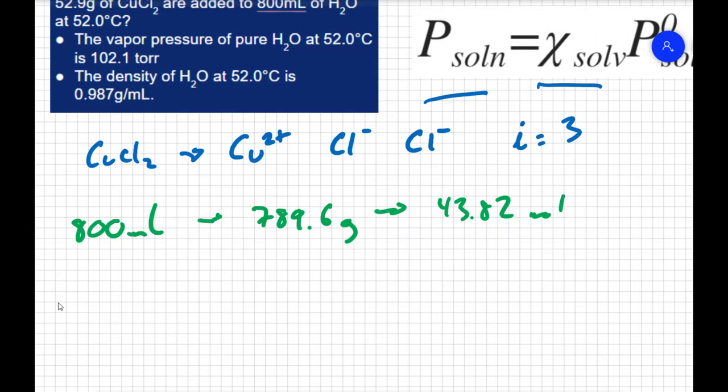For the copper(II) chloride, I have 52.9 grams of CuCl2. So that comes out to 0.393 moles of CuCl2.